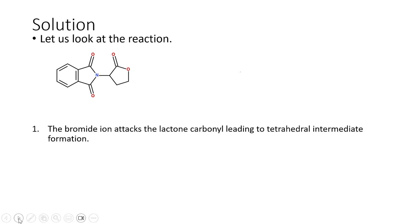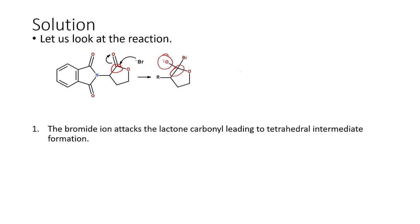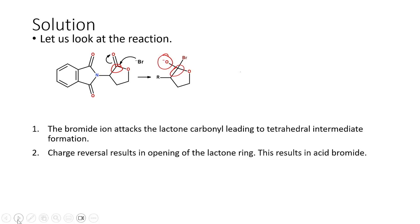The first step is attack of the bromide anion because the reaction happens in the presence of HBr. The electrophilic carbon is attacked by the bromide anion, with the negative oxygen pulling out the pi bond electrons to become a negatively charged anion, giving a tetrahedral intermediate. Once the tetrahedral intermediate is formed, since there is a negative charge on the oxygen atom, charge reversal takes place, opening up the lactone ring and giving the acyl bromide with the oxide anion.